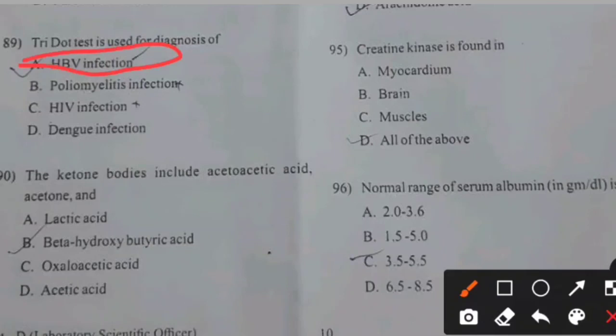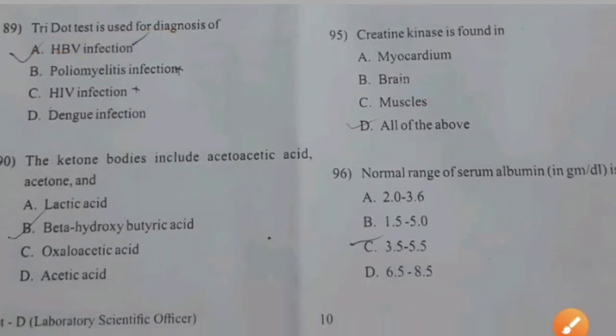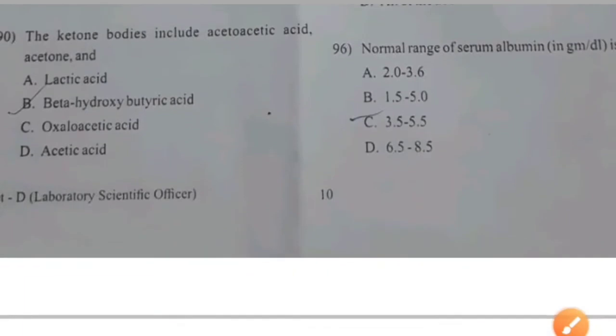Creatine kinase is found in myocardium, brain, and muscles — right answer D: All of the above.